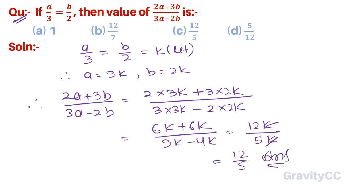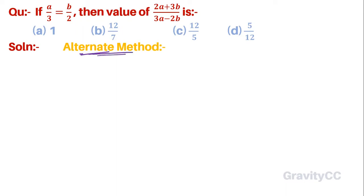Or, alternate method: Here given a/3 = b/2, after rearranging we get a/b = 3/2.